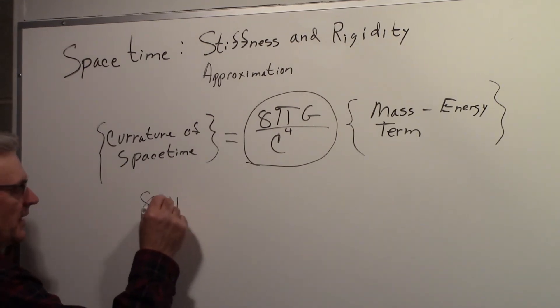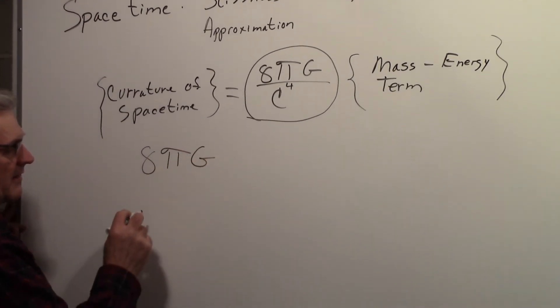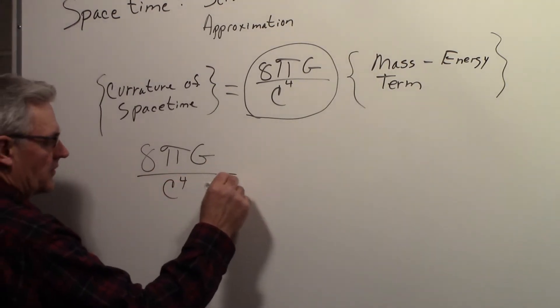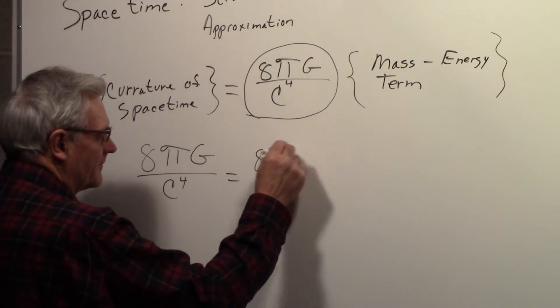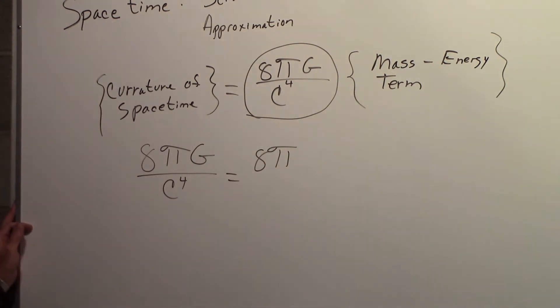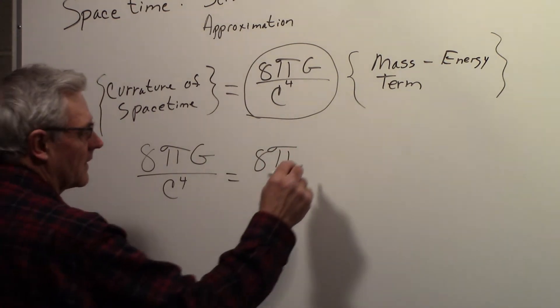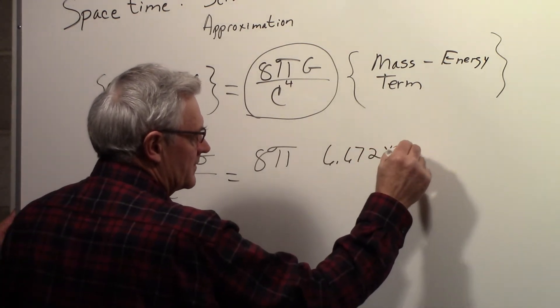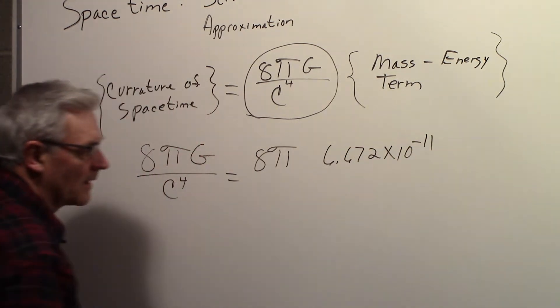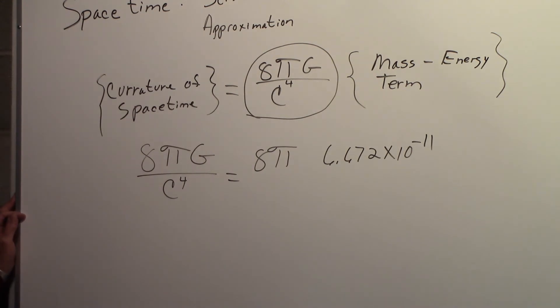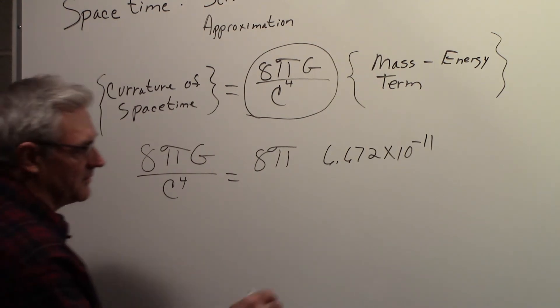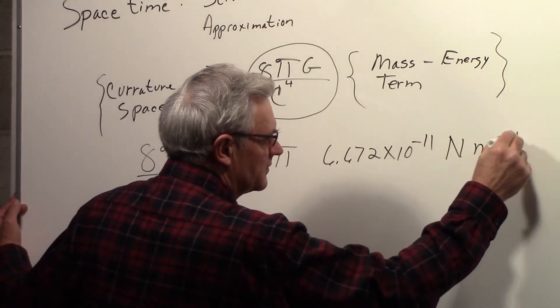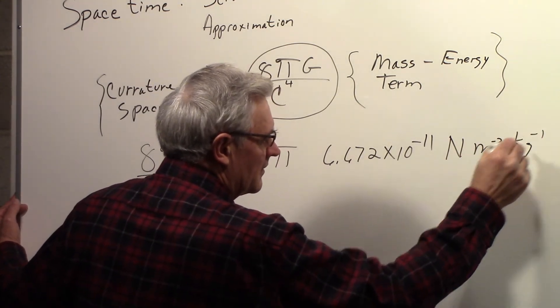So, 8π times the gravitational constant, over c to the 4th, will be equal to 8π, times the gravitational constant, 6.672 times 10 to the minus 11th, and that's in units of Newton, meter^-2, kilogram^-1,